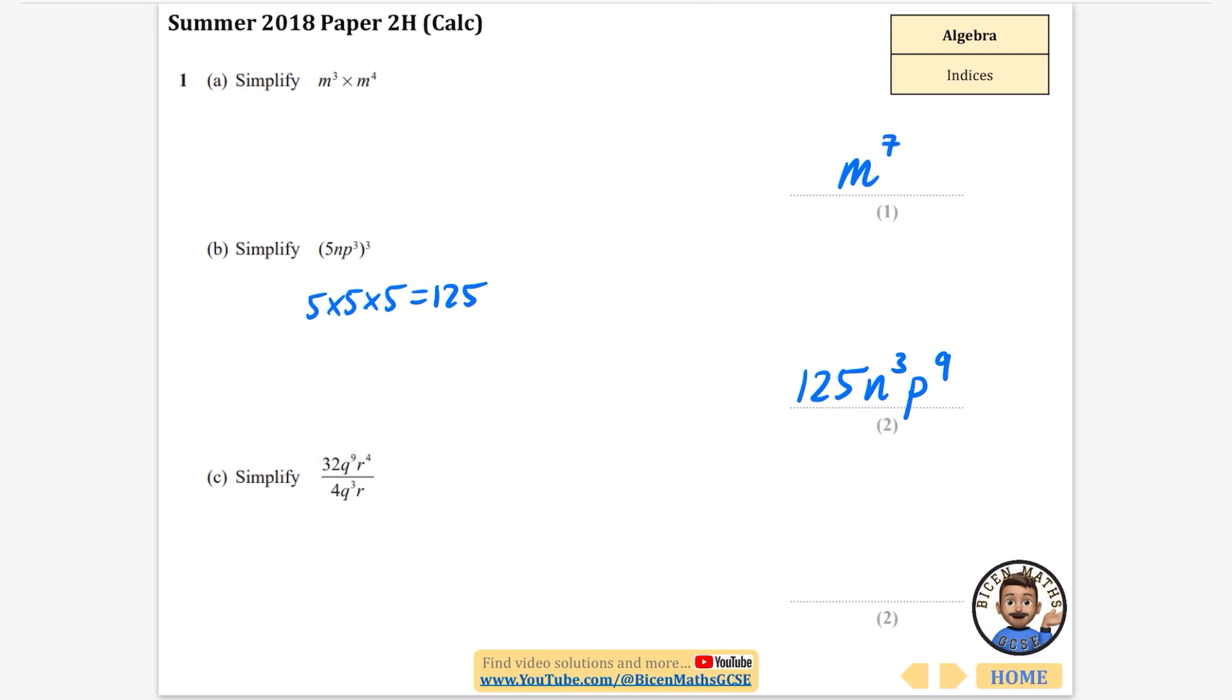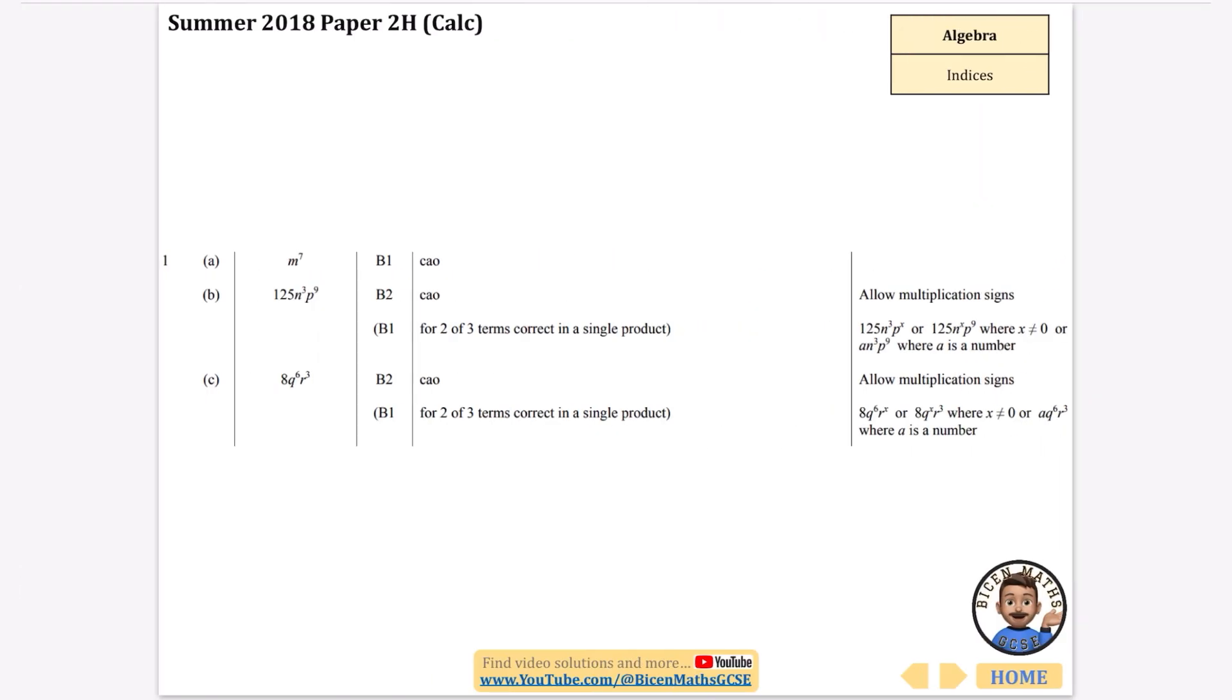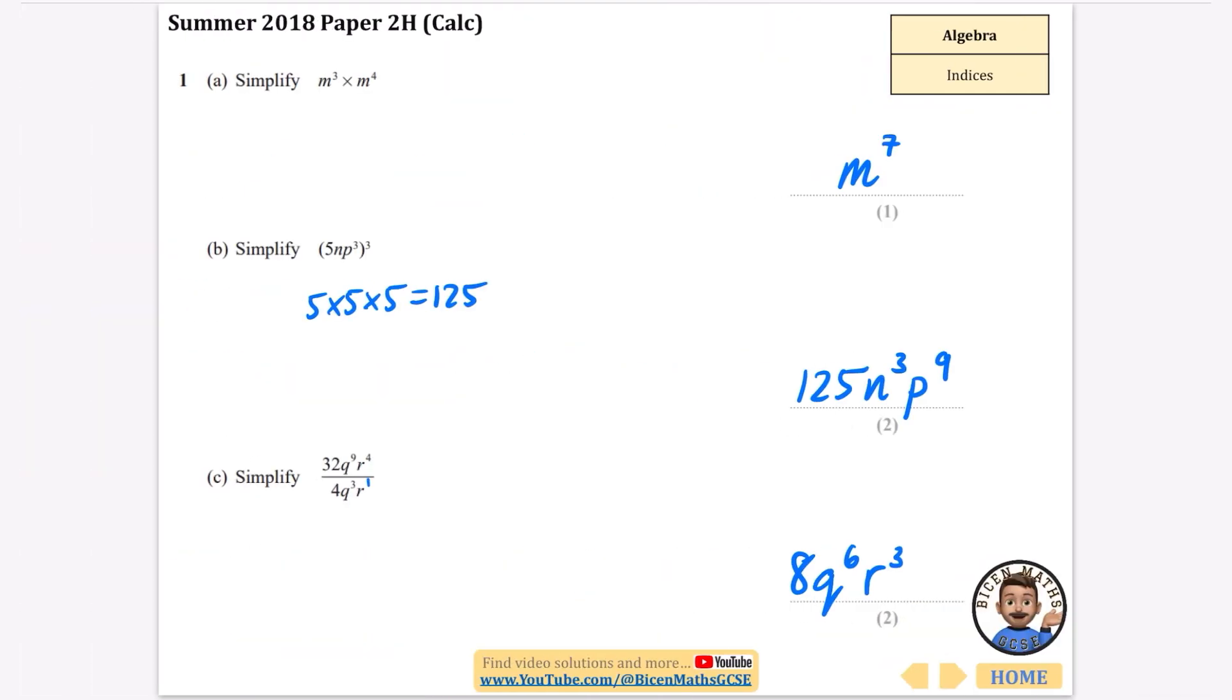This one, when you simplify them, we're doing a division. So the 32 divided by 4 is 8. Q to the power of 9 divided by q cubed, you subtract the powers, so you get q to the power of 6. There's a secret power of 1 there, so r to the power of 4 divided by r to the power of 1, you subtract the 4 and the 1, and you get 3. So we have got the answers m to the power of 7, and these ones that we have here that were correct as well.